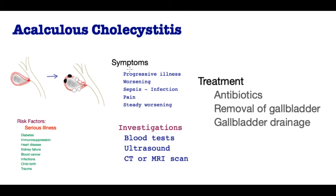Perforation causes infected bile material to extrude within the abdomen, which is hugely dangerous and can be fatal if not treated. Importantly, acalculous cholecystitis does not occur in a well person — there is almost always an underlying serious illness that predisposes its development. Risk factors include diabetes, anything that suppresses immunity, heart disease, kidney disease, cancers, infection, childbirth, and trauma.